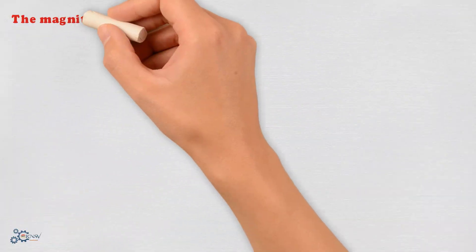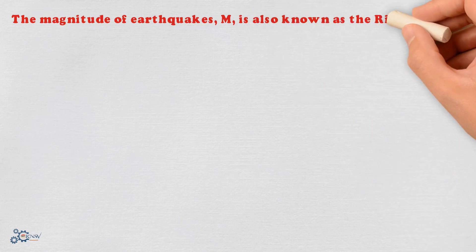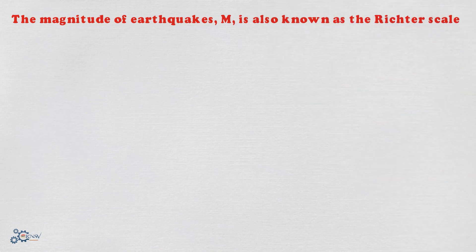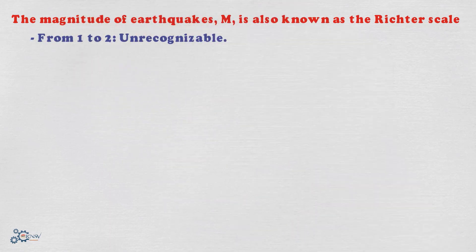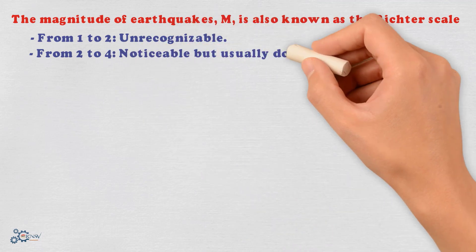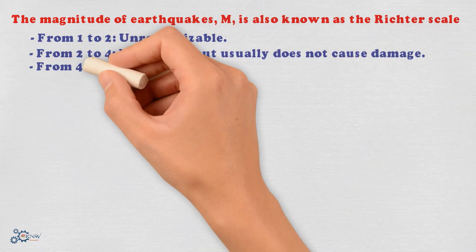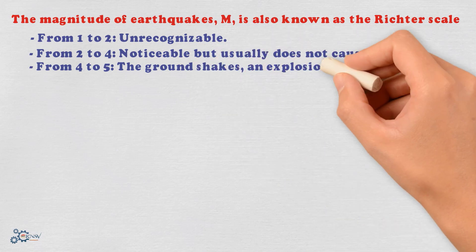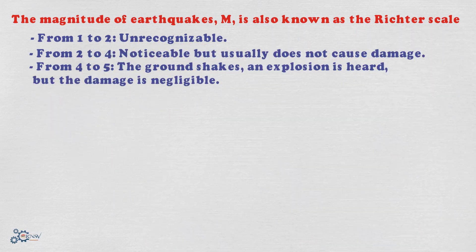The magnitude of earthquakes, N, is also known as the Richter scale. Visualize the Richter scale as follows: from 1 to 2, unrecognizable; from 2 to 4, noticeable but usually does not cause damage; from 4 to 5, the ground shakes, an explosion is heard, but the damage is negligible.